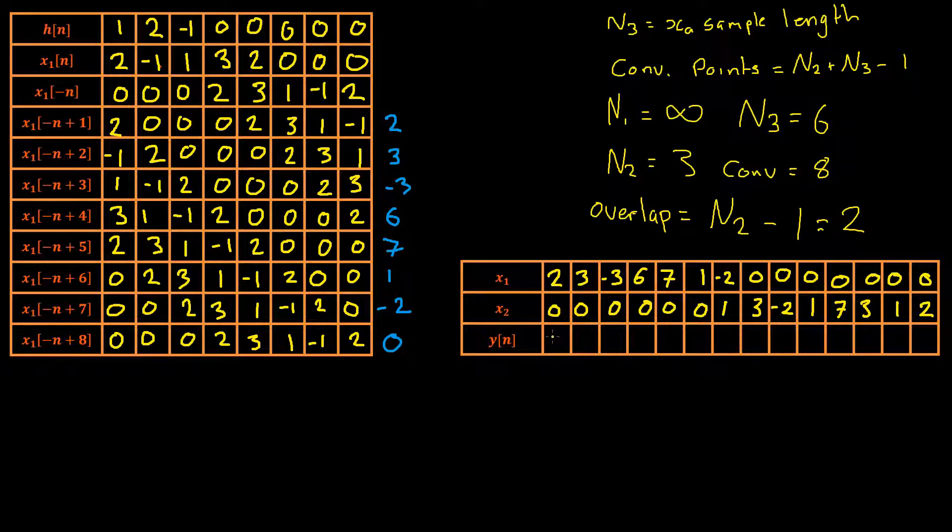Okay so then to calculate the output of our convolution here we simply add down all of the columns to get our output. So that will give us two, three, negative three, six, seven, one and then we add negative two and one which will give us negative one and then the rest of the terms all remain as they are.